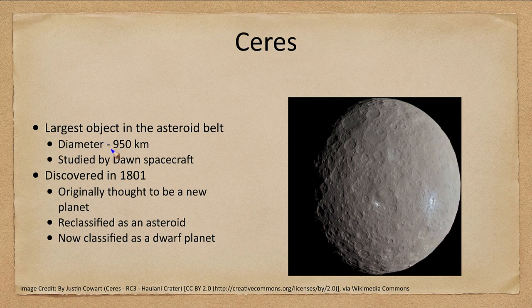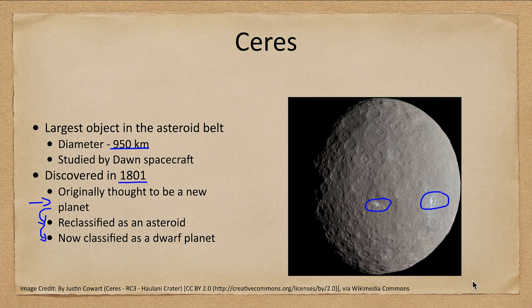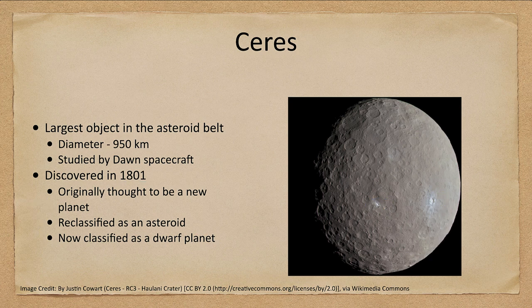Ceres is the largest object in the asteroid belt and is only about a thousand kilometers across. Discovered in 1801, it has gone through a number of different classification changes over the years. It is one of the objects that has been studied close-up by spacecraft. We can see it is heavily cratered with very bright areas — not ice as we saw in the moons of the outer planets, but possibly some kind of salty deposit dug up in impacts. It has a very old surface with no sign of geological activity.